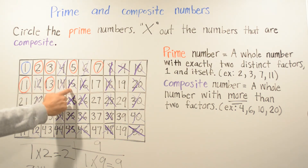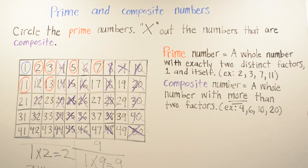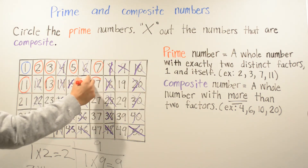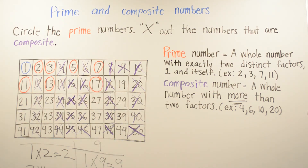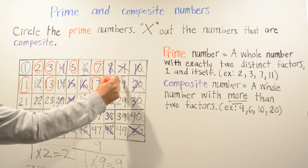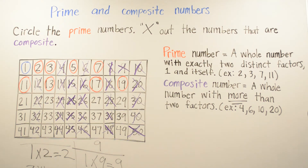We already know that 14, 15, and 16 are composite. Then 17 is going to be a prime number because you can only multiply 1 and itself. 19 is also prime — you multiply 1 and itself. Then 21 — X out 21 — it's going to be a composite number because you can multiply 3 times 7, which gives you 21.